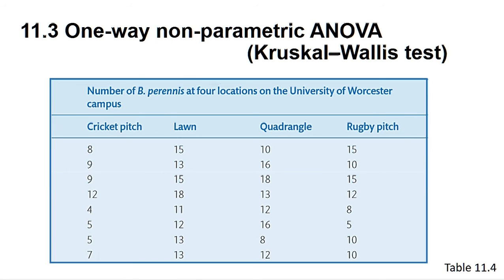In the example we are using here, eight quadrats were sampled for the number of daisy plants growing in four distinct grassed areas with different uses at the University of Worcester. These areas were the cricket pitch, the lawn, the quadrangle, and the rugby pitch.